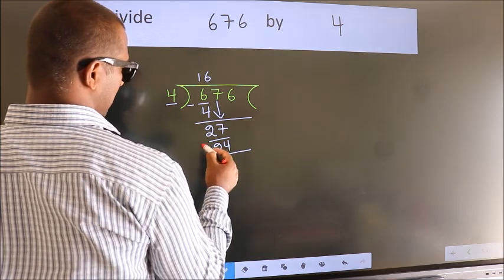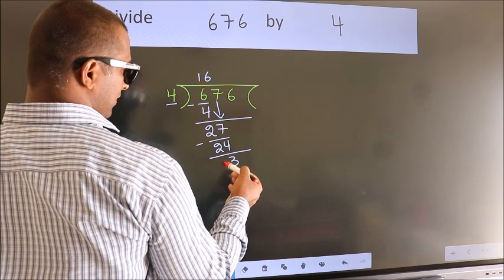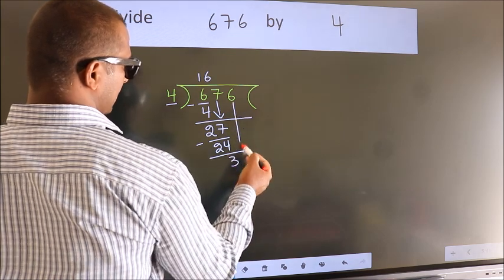Now, we subtract. We get 3. After this, bring down the beside number.